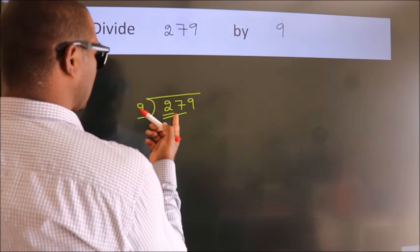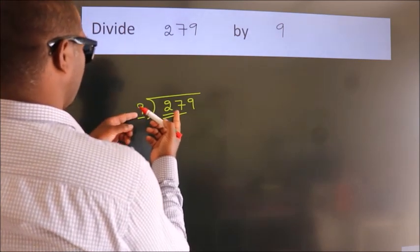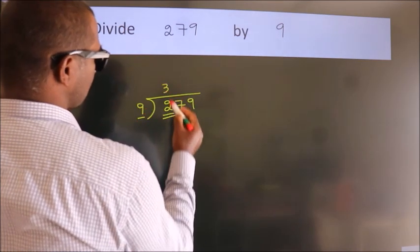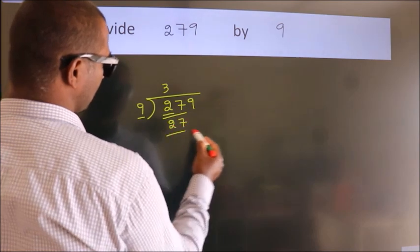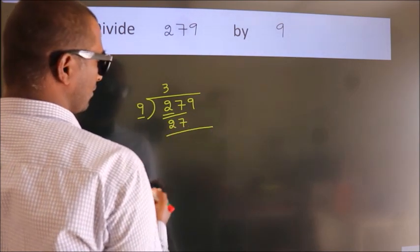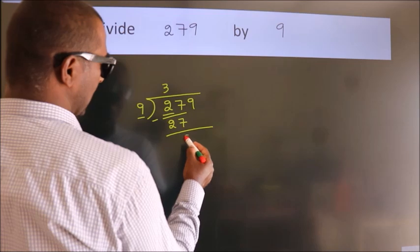When do we get 27? In the 9 table. 9 threes are 27. Now, we should subtract. We get 0.